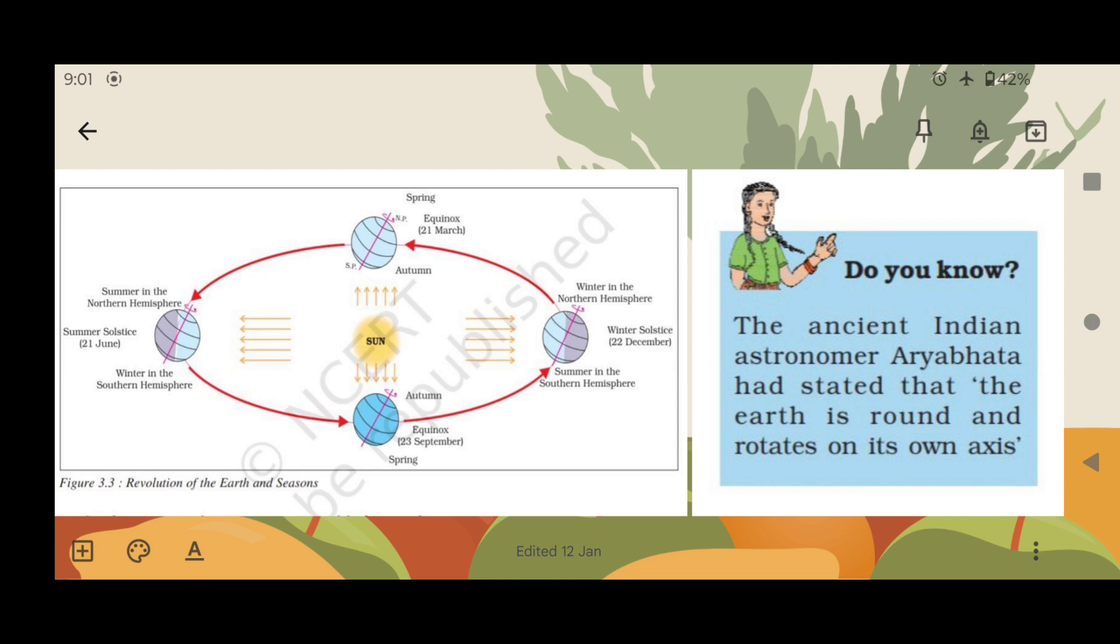Another equinox is on 23rd September. In north pole, it is autumn and in south pole, it is spring. Summer solstice on 21st June: summer in northern hemisphere and winter in southern hemisphere.